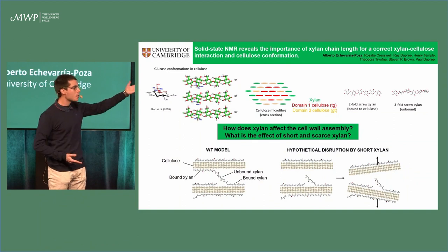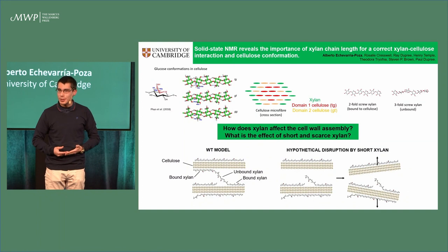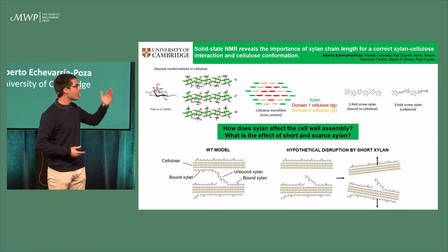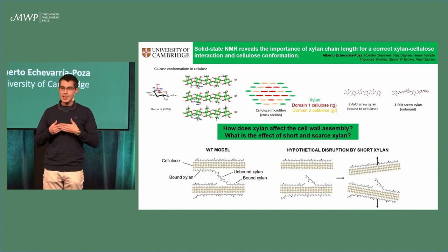The questions that I'm trying to answer are: how does xylan affect the cellulose assembly, and more particularly, what is the effect of short and scarce xylan?